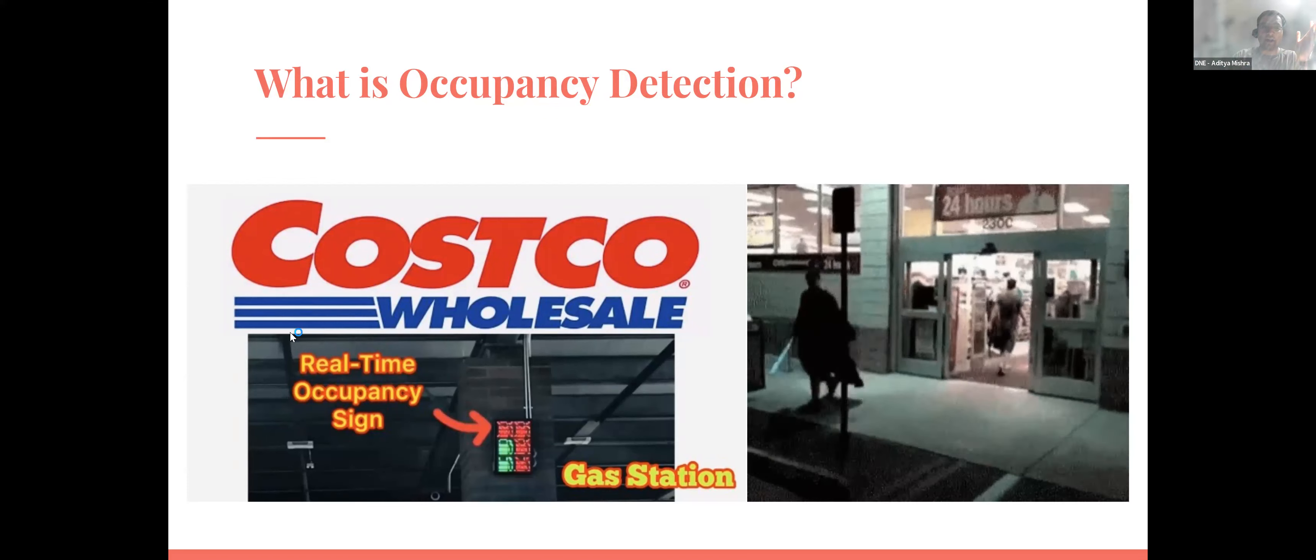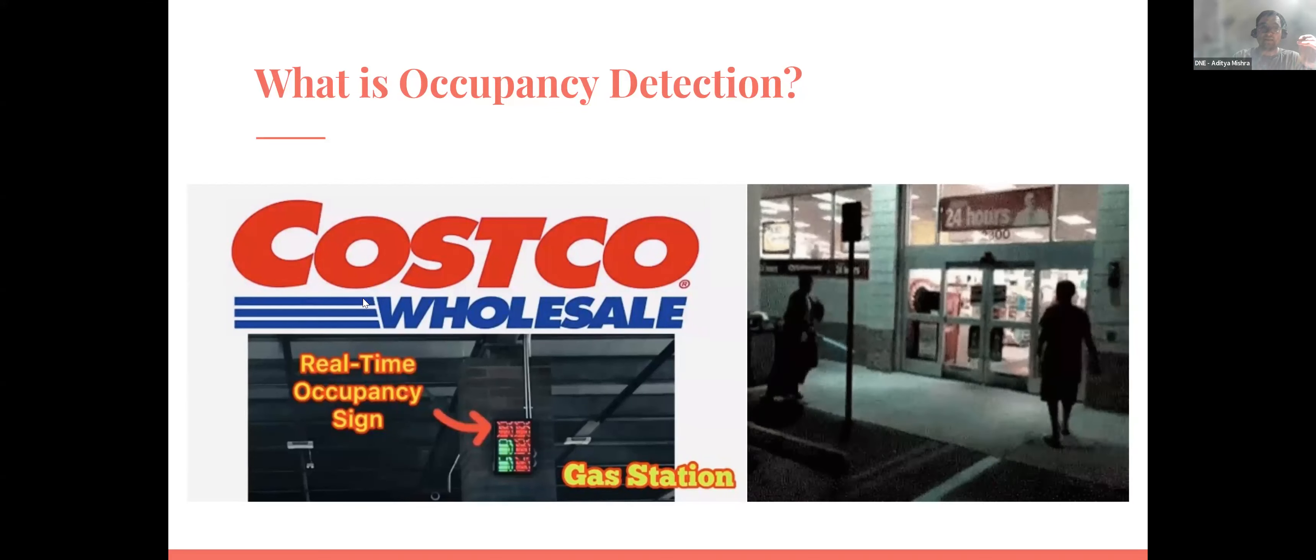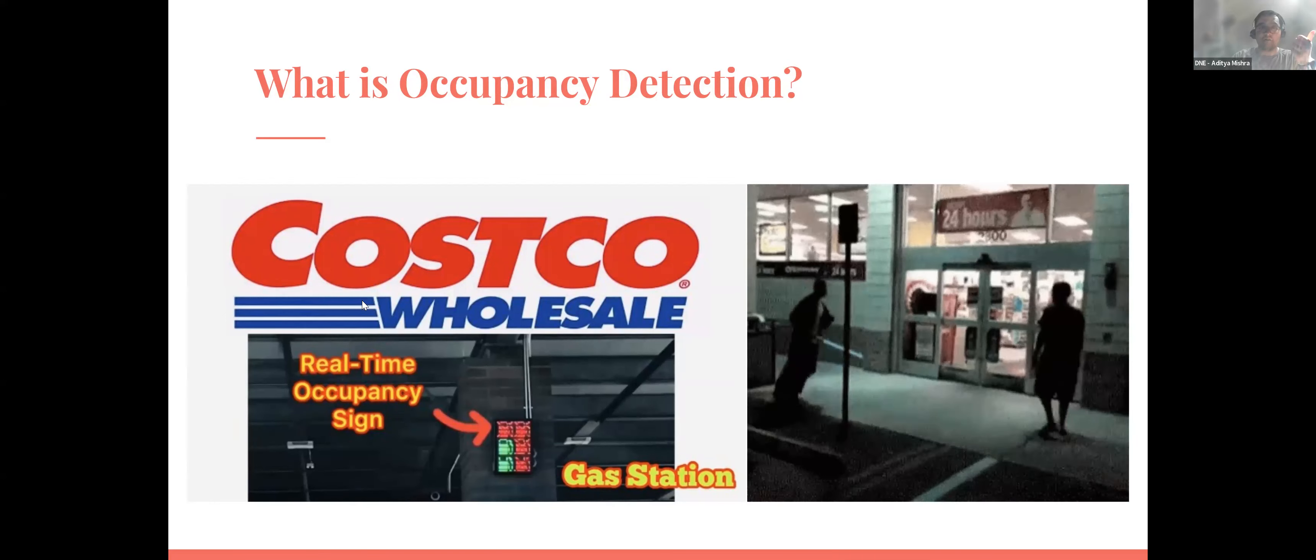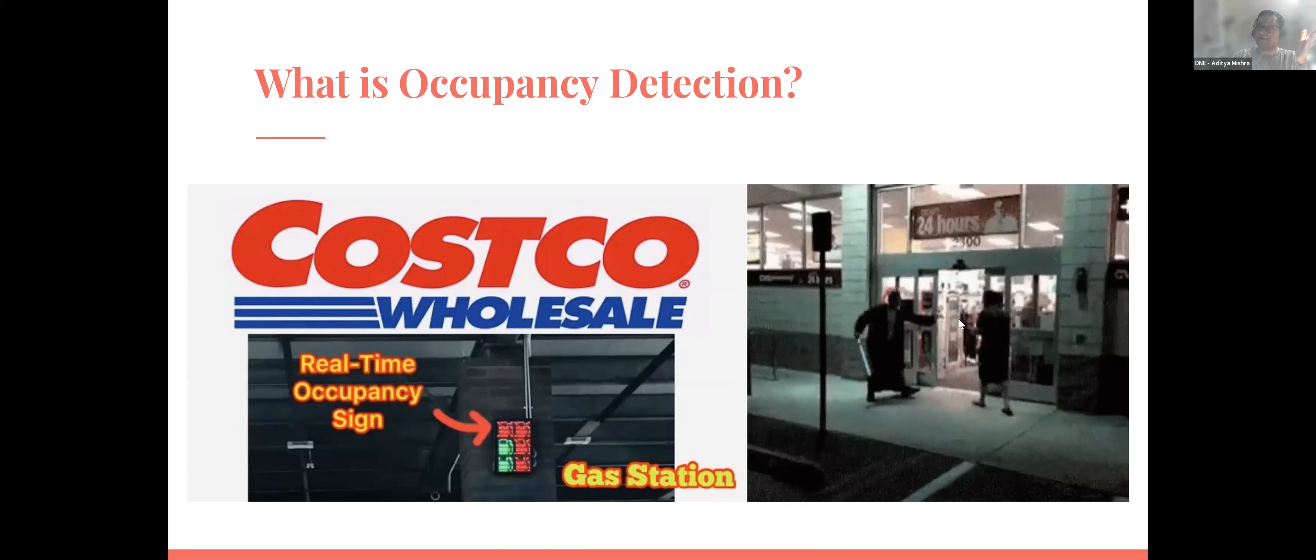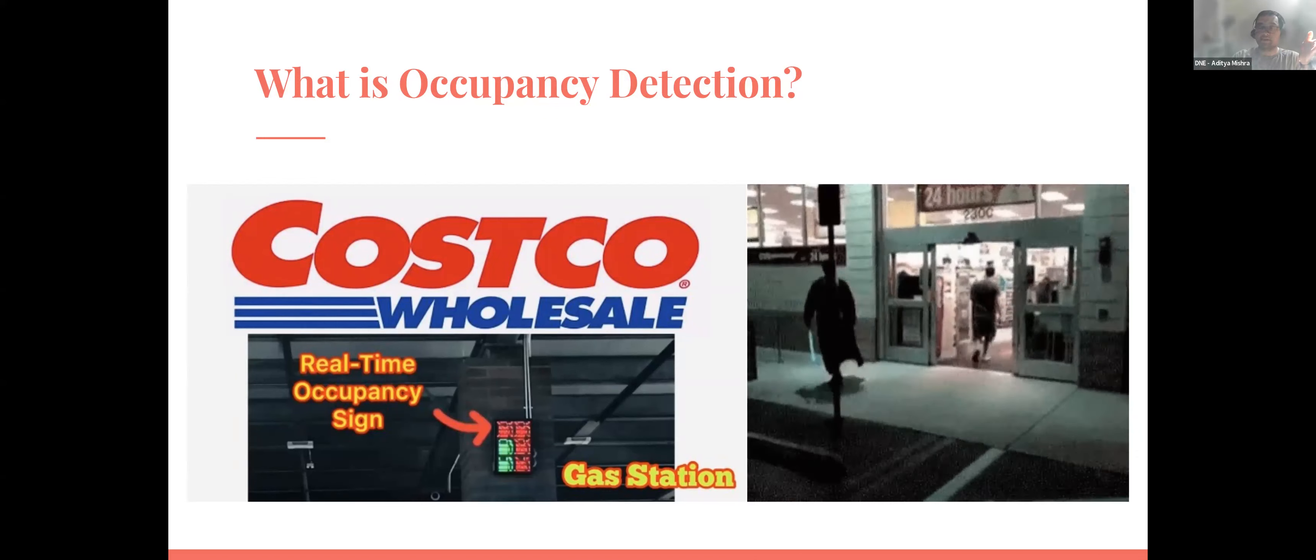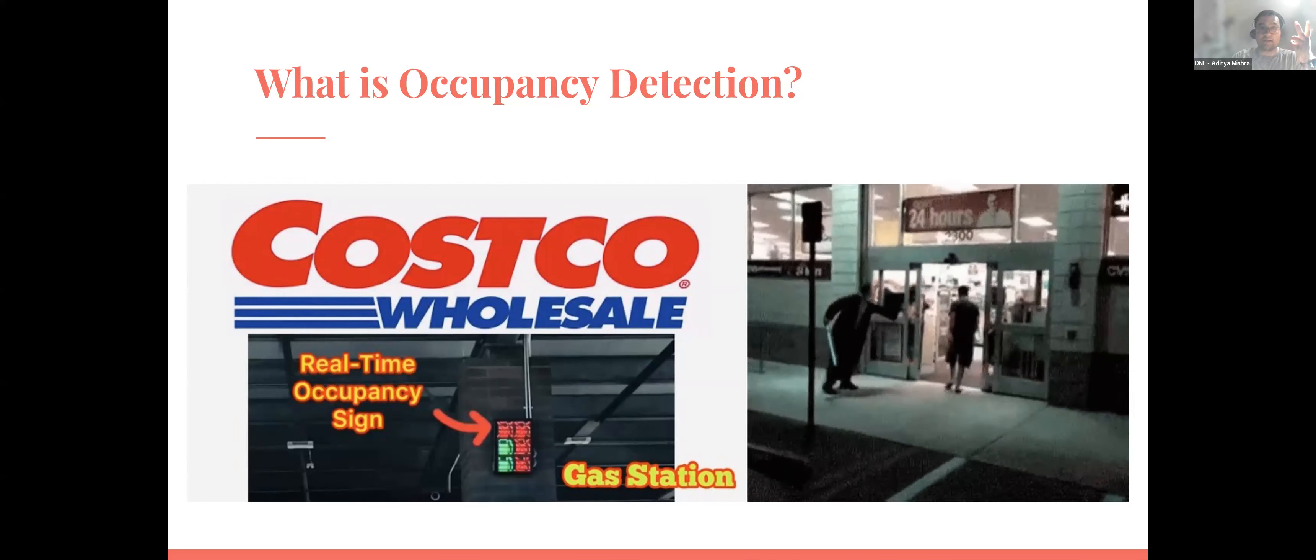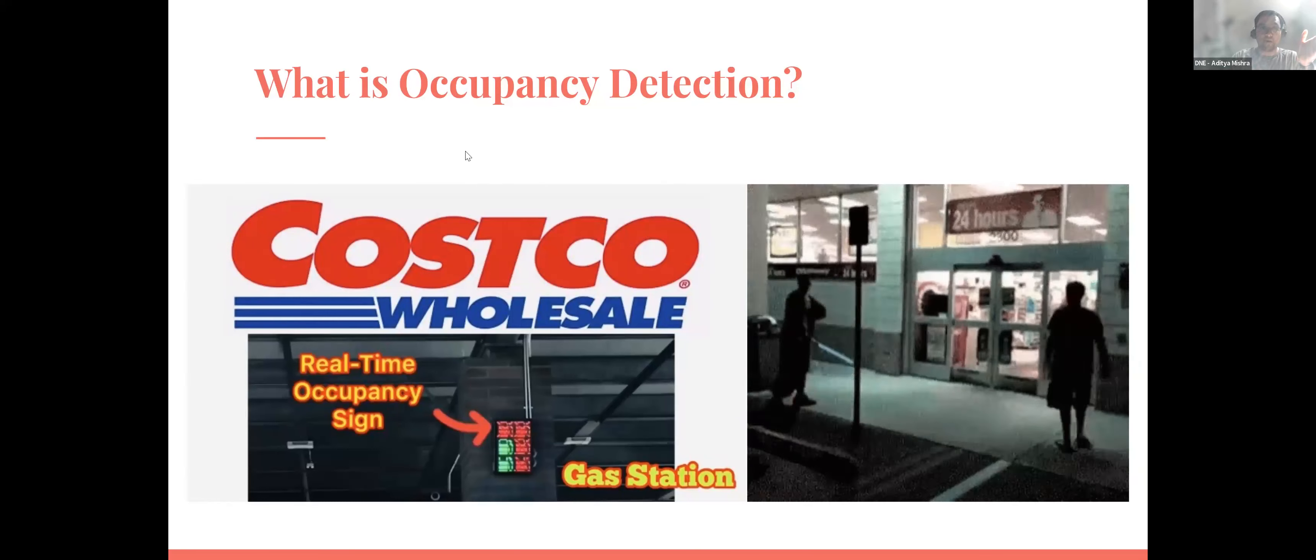It's used so frequently in our everyday lives, you probably don't even notice it. If you take a look at the left, you can see that at this Costco wholesale, long lines for gas are made way more efficient with the use of these occupancy detection systems, making the customer experience way better while making the company more money. And additionally, on the right, automated doors are present in pretty much every business, making life way easier for the customer and saving energy for all these companies. These occupancy detection systems are everywhere and their use is growing every day.